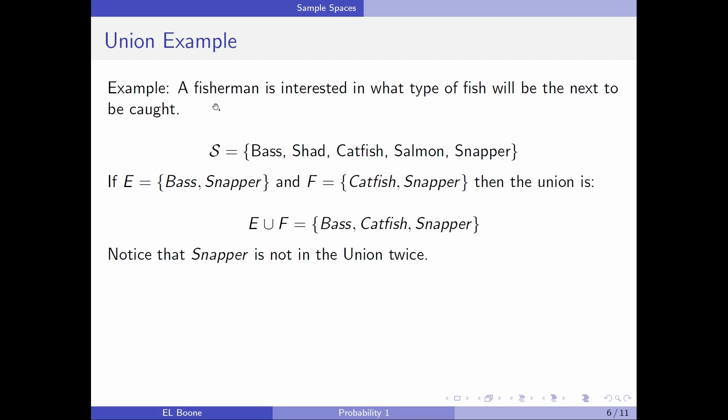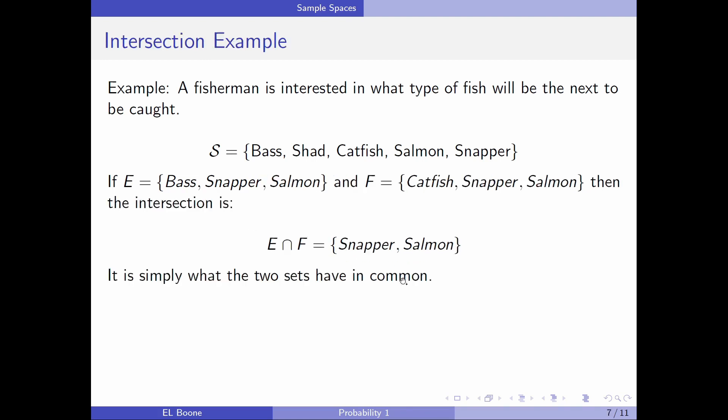A union example. Here, let's think we have the same sample space. Let E be bass and snapper, and F be catfish and snapper. Then the union is bass, catfish, and snapper. Notice the snapper is not counted twice here, right? Because it's an outcome. We couldn't have an outcome of snapper, snapper on one pole. But it could be a bass or a catfish or a snapper. Any of those would be fine. So you don't put it in there twice.